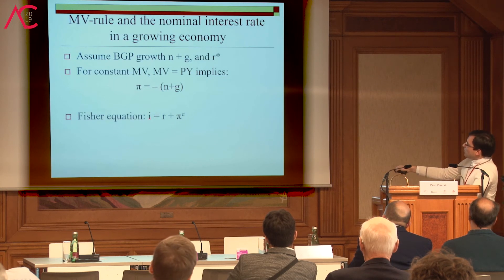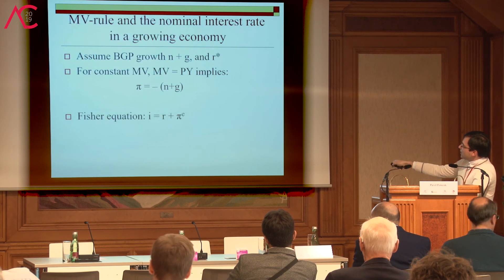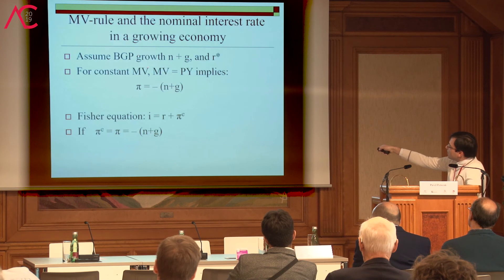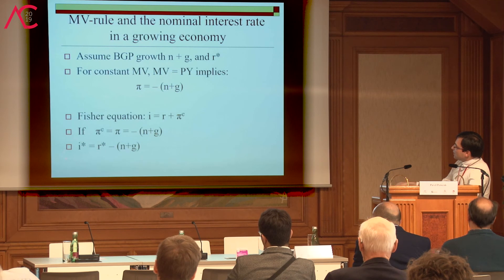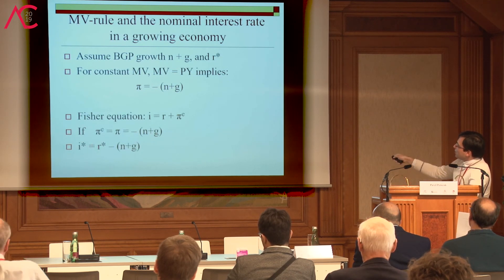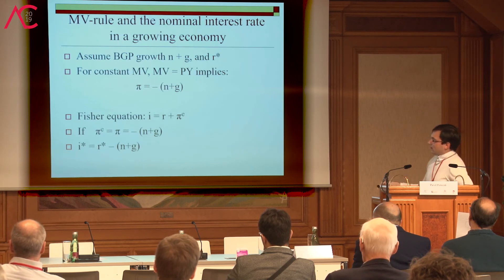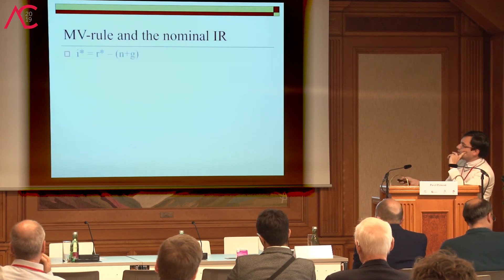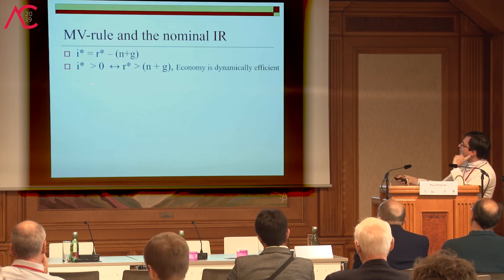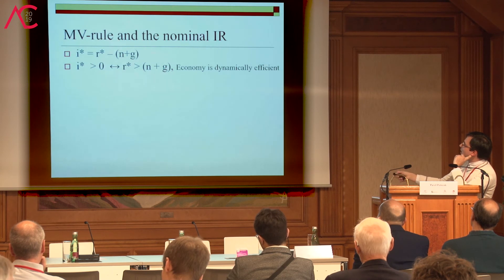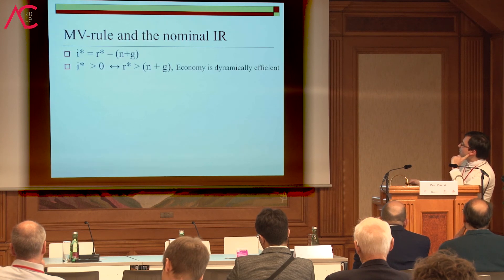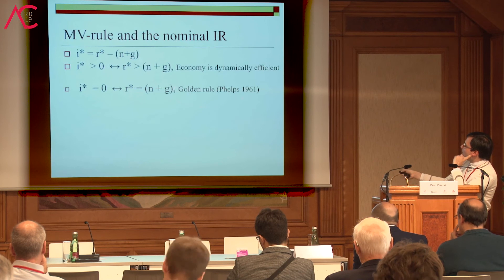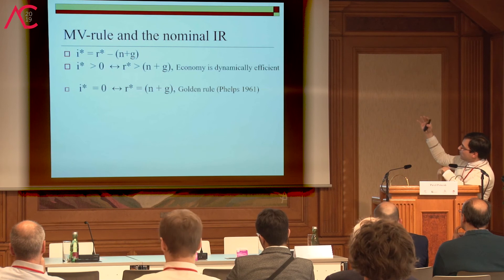From the Fisher equation, the nominal interest rate i equals the real interest rate r plus expected inflation. According to the Hayek MV rule, inflation should equal negative (n+g) on the balanced growth path. Combining these, the nominal interest rate in the long run under the Hayek scheme will be r minus (n+g). Economists generally agree the nominal interest rate cannot be negative, so the MV rule will produce a positive nominal interest rate when the real interest rate is higher than the growth rate of the economy. At the golden rule of capital accumulation — where the interest rate exactly equals the growth rate — the MV rule produces a zero nominal interest rate, the point where consumption is maximized.